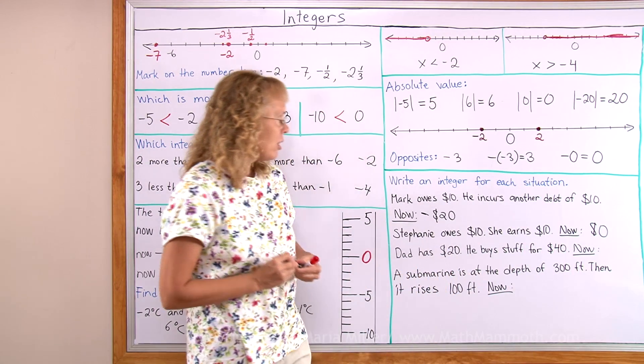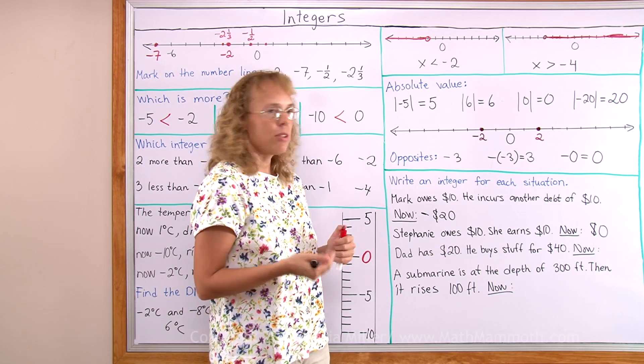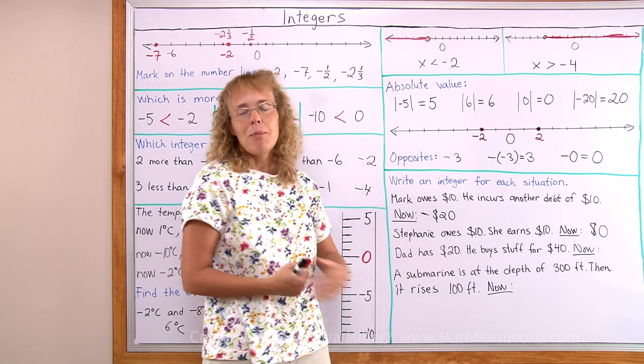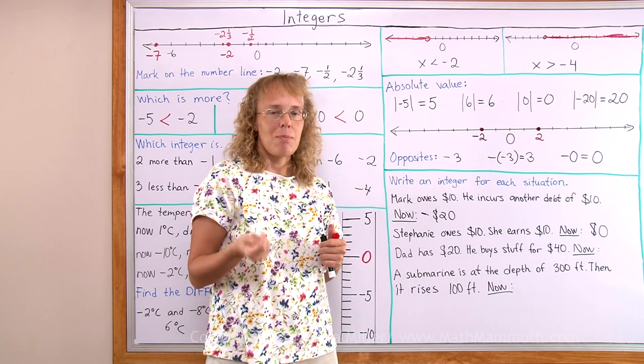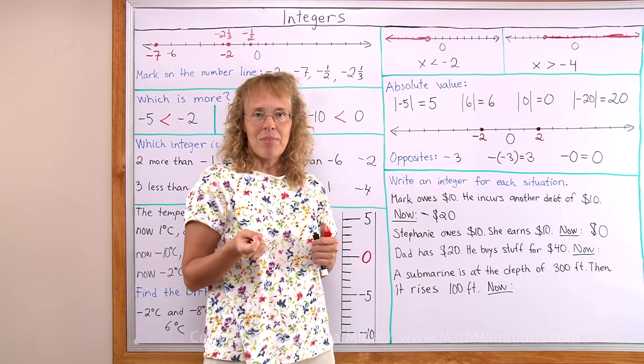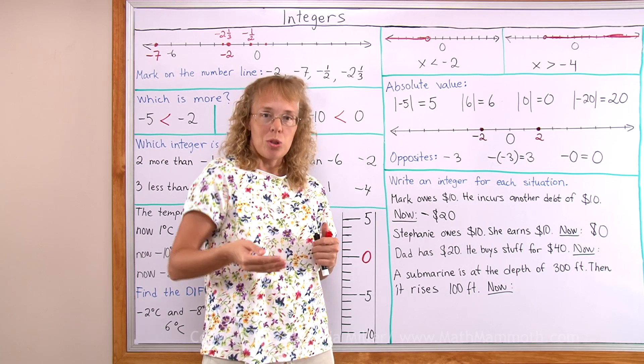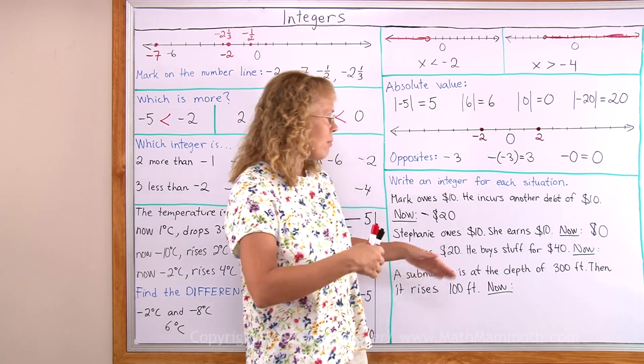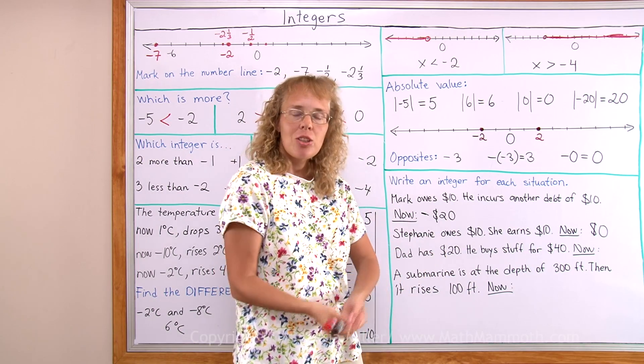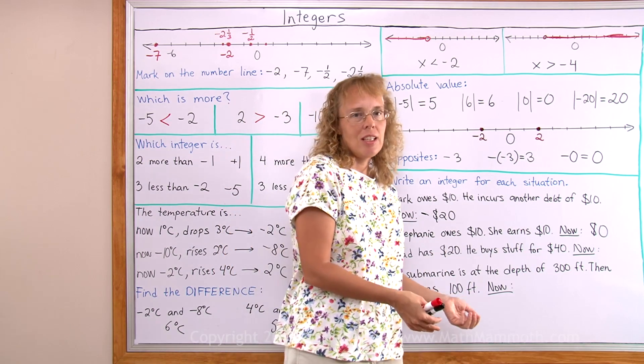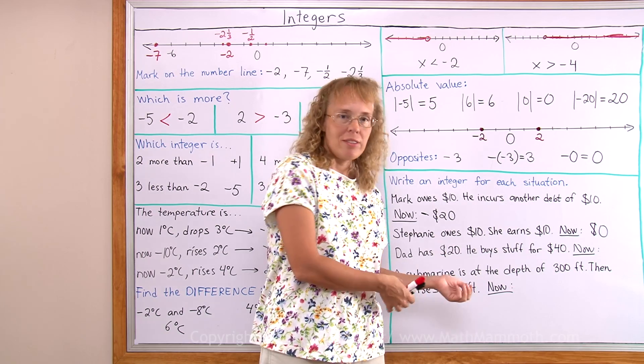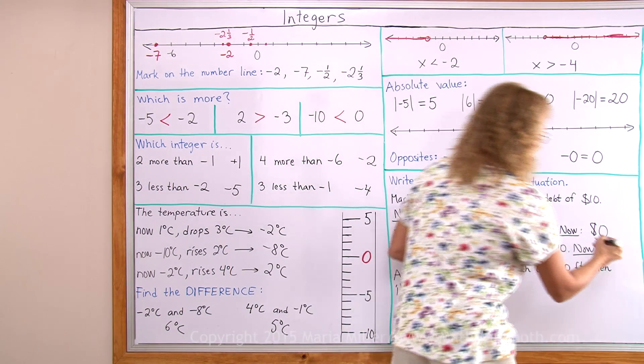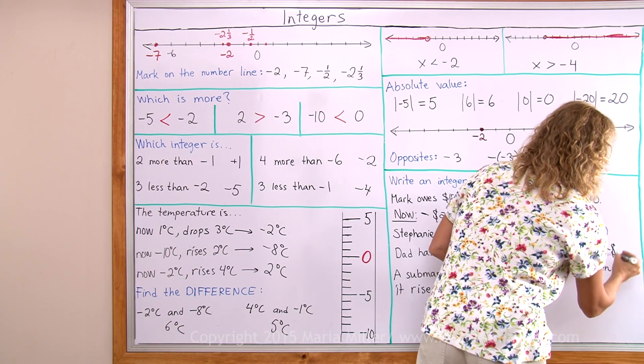And dad has 20 dollars and he buys stuff for 40 dollars. Now he cannot actually buy stuff for 40 dollars if he only has 20. But let's say the store owner lets him buy stuff on credit. In other words, owe the store owner some. So dad has 20 dollars and he buys stuff that is worth 40 dollars. So he uses up all of his 20 dollars. But then he will also owe, after that, 20 dollars to the store owner. So now his money situation is negative 20 dollars.